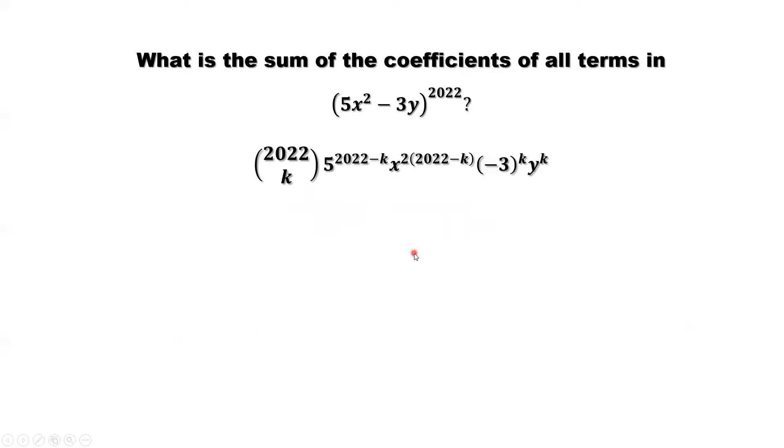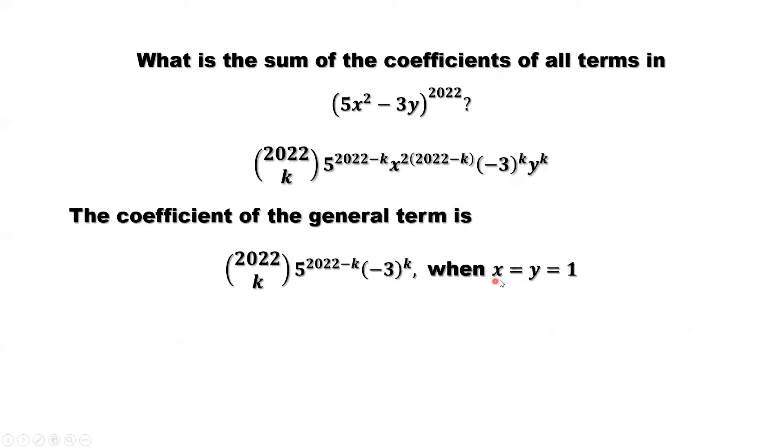For the general term, what is the coefficient of this general term? That means we want to get rid of x and y. How to do this? Just let x equals y equals 1. If x equals 1, this part will disappear. Y equals 1, this part will disappear. Only thing left is the coefficient of the general term.